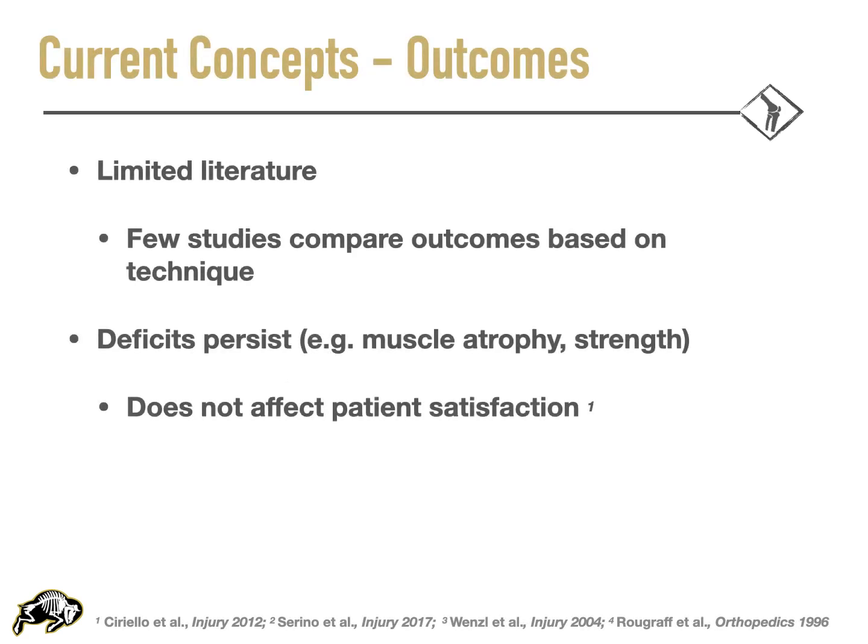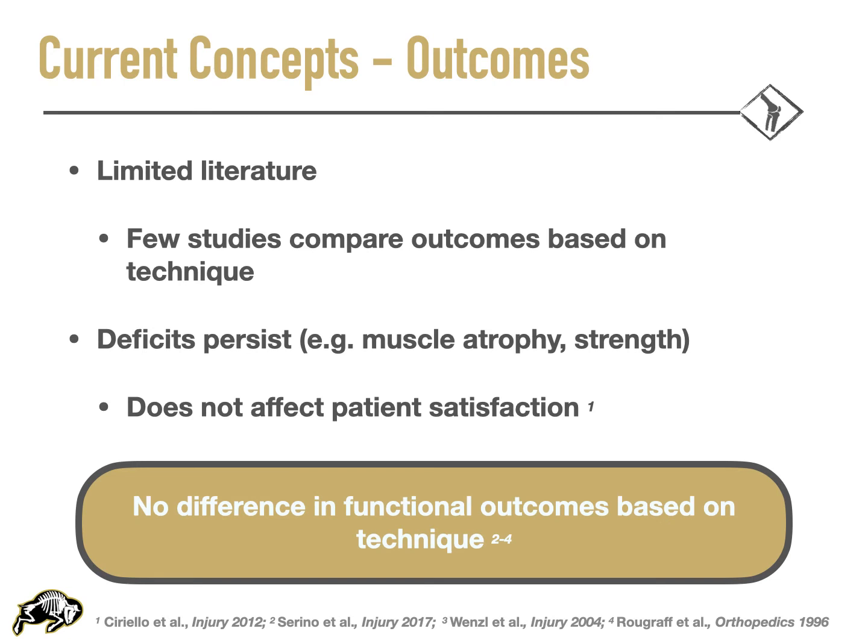Unfortunately, there is limited literature regarding comparison of outcomes with different surgical techniques. Deficits are not uncommon, with residual muscular atrophy and strength deficits commonly being reported. Nevertheless, these deficits don't appear to largely impact patient satisfaction as reported in the literature. In general, the few studies that are out there show excellent results in range of motion and return to pre-injury activities following acute quad tendon rupture repair, regardless of approach, and overall low rates of re-rupture and re-operation were reported.